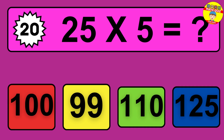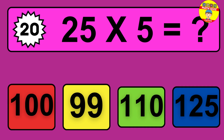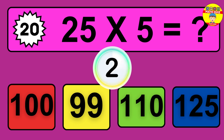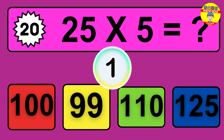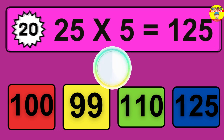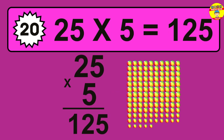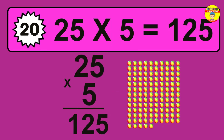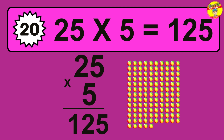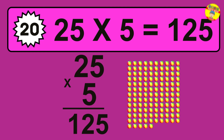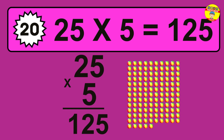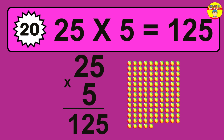Question twenty: 25 times 5 equals what? The answer is 25 times 5 is 125. To calculate, we have 25 groups with 5 balls each. So how many balls do we have? 125 balls.